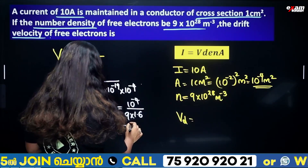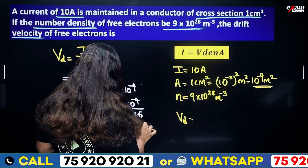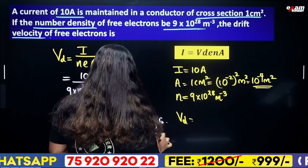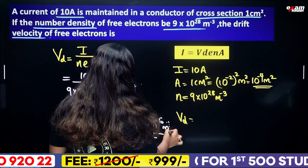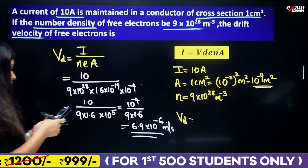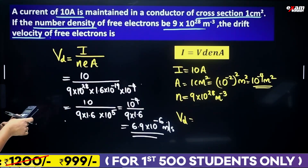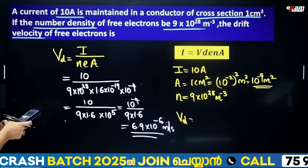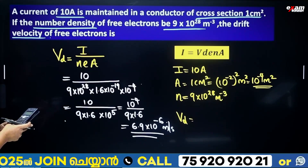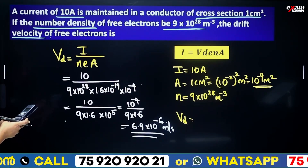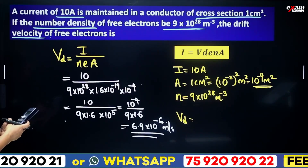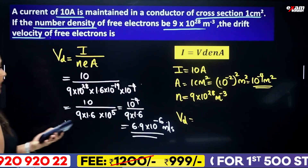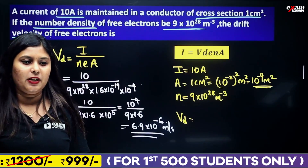The result is 6.9×10⁻⁶ meter per second. That is the drift velocity: 6.9×10⁻⁶ m/s.